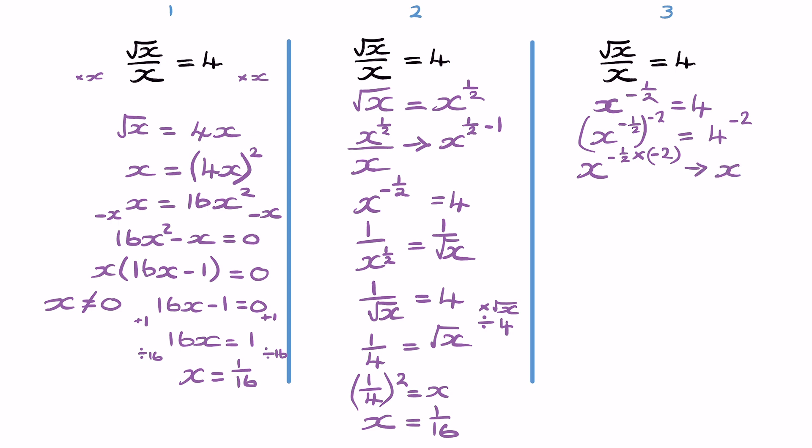And that would give me x to the power negative half multiplied by a negative 2, which will give x to the power of 1. Now we have 4 to the negative 2, and that would be 1 over 4 squared, and that gives us x equals 1 over 16.